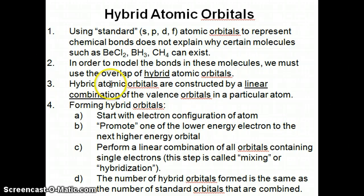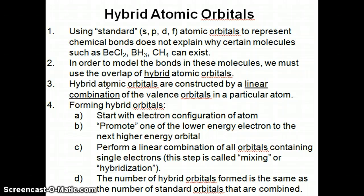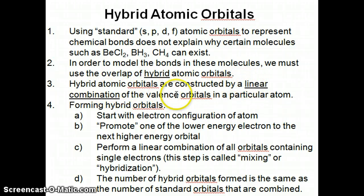So first, let's talk about what hybrid atomic orbitals are. They are basically a combination of atomic orbitals that you have in a particular atom. For example, if you have an atom with an s orbital and a p orbital with electrons, you might combine them to form a hybrid orbital that has features of both the s and the p orbitals together. You might combine one s with one p, or one s with two p orbitals, and so on. This process of combining different valence orbitals is referred to as linear combination.